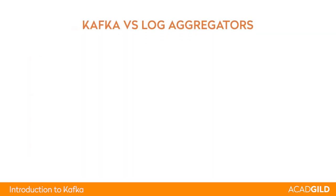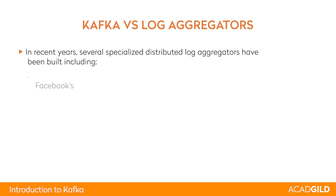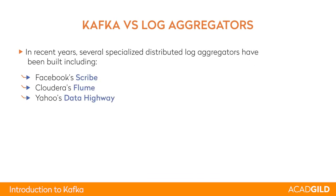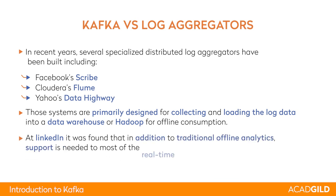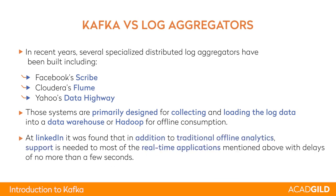Comparing Kafka to log aggregators: there have been certain log aggregators like Scribe, Flume, and Highway, but they were designed to load data into Hadoop for consumption. Apache Kafka, on the other hand, gives the consumer full flexibility to use the data either in batch processing or in real-time processing. Consumers may want to run processes daily or after every minute — it is completely up to them.